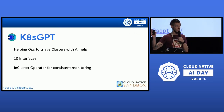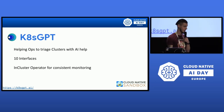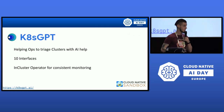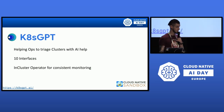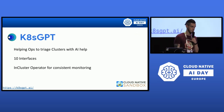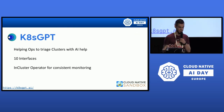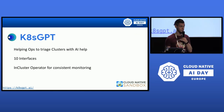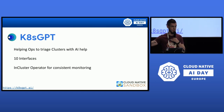With the help of AI, you can implement k8sGPT with 10 different interfaces: ChatGPT, Gemini, Vertex AI, AWS, and all the different vendors. It also has an in-cluster operator for consistent monitoring, so you can run it in your shell or deploy it in every cluster and get logs sent to all your different environments.